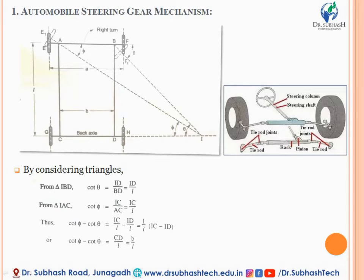The steering gear mechanism is used for turning the vehicles, especially the front wheels. Whenever you are taking a left or right turn, the inner or outer wheel requires a differential path to be travelled. The inner wheel requires a little less path to cover whereas the outer wheel requires a larger path. There must be a proportional relation to satisfy this condition, and this is fulfilled by the automobile steering mechanism.